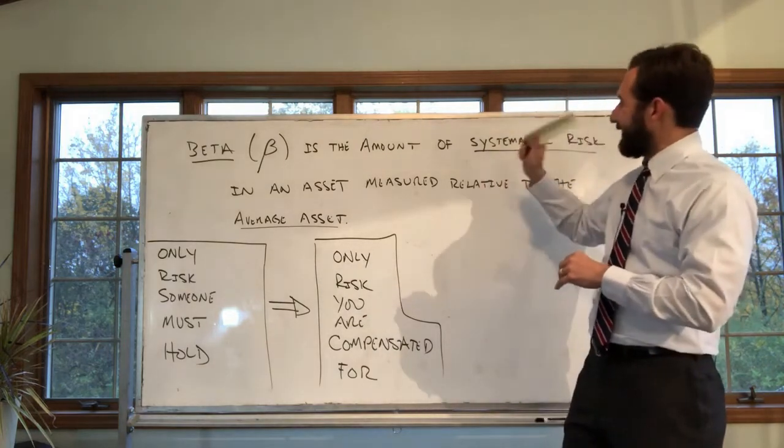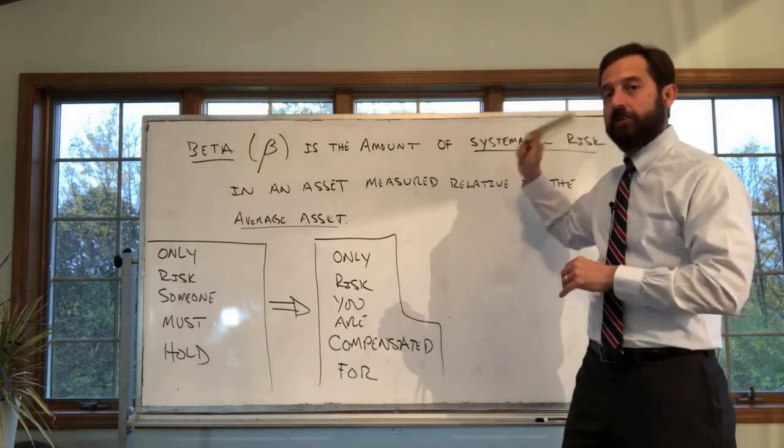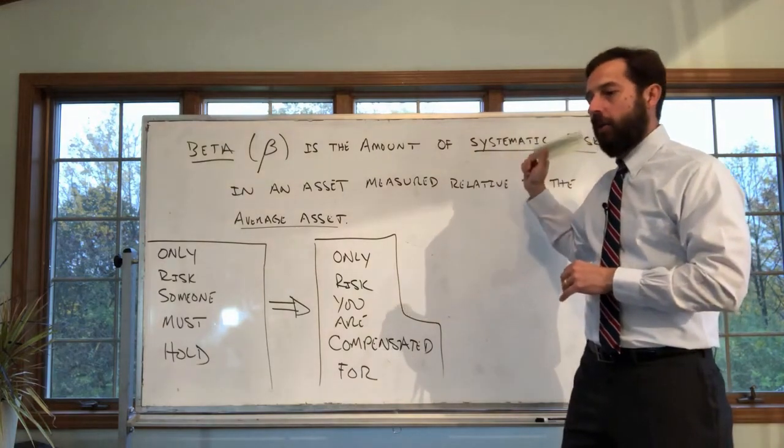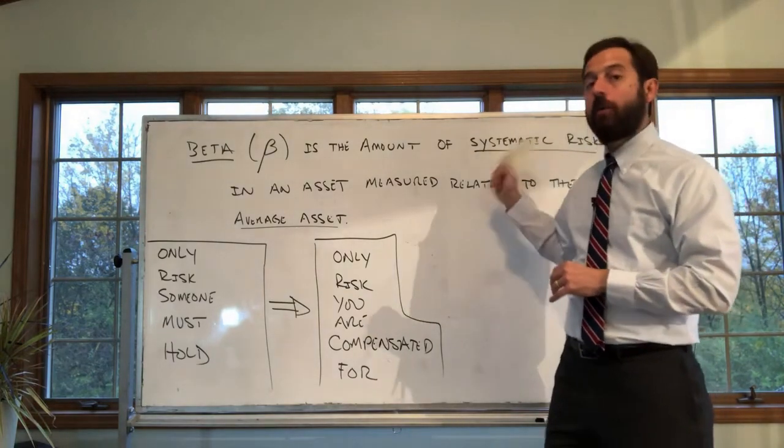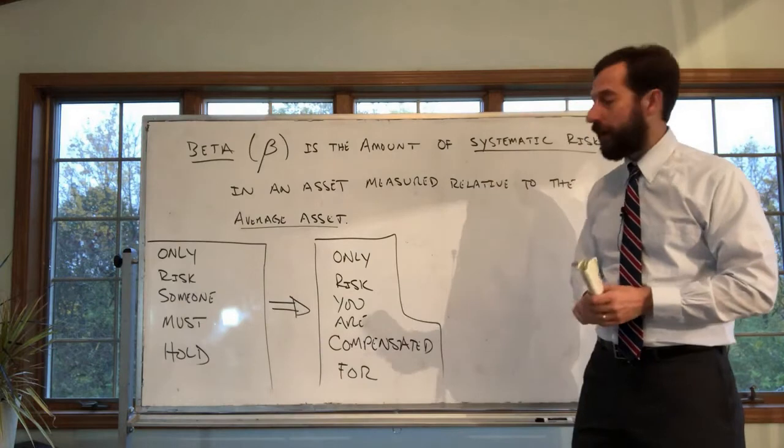But anyone buying those assets has to hold systemic risk. This is what you are compensated for. This is only what you are compensated for when you buy a security.